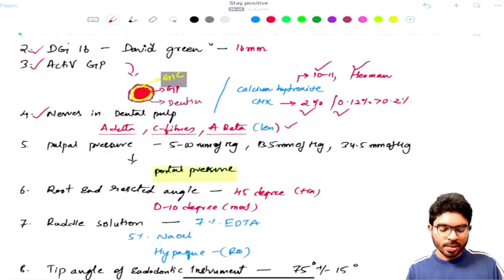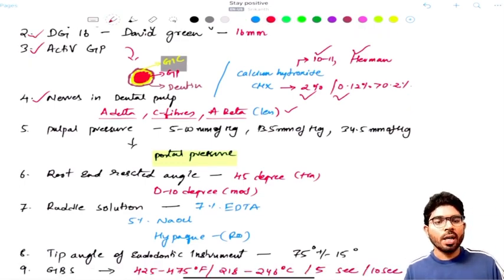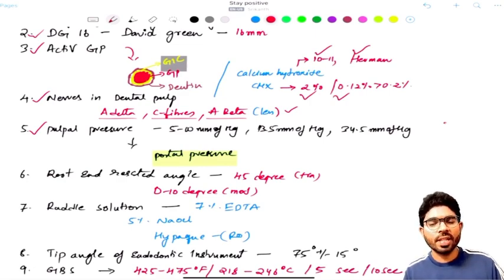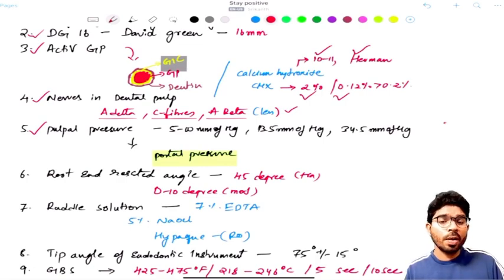Next, we are talking about the pulpal pressure. So when I'm talking about the pulpal pressure, normal pulpal pressure is 5 to 10 millimeters of Hg or you can consider it as 10 to 15 centimeters of water. If you're comparing with water, it is 10 to 15 centimeters. If you're comparing with Hg, it is 5 to 10 millimeters of Hg, which is almost equal to the portal pressure. The portal pressure is also the same - that is 5 to 10 millimeters of Hg or 10 to 15 centimeters of saline or water.